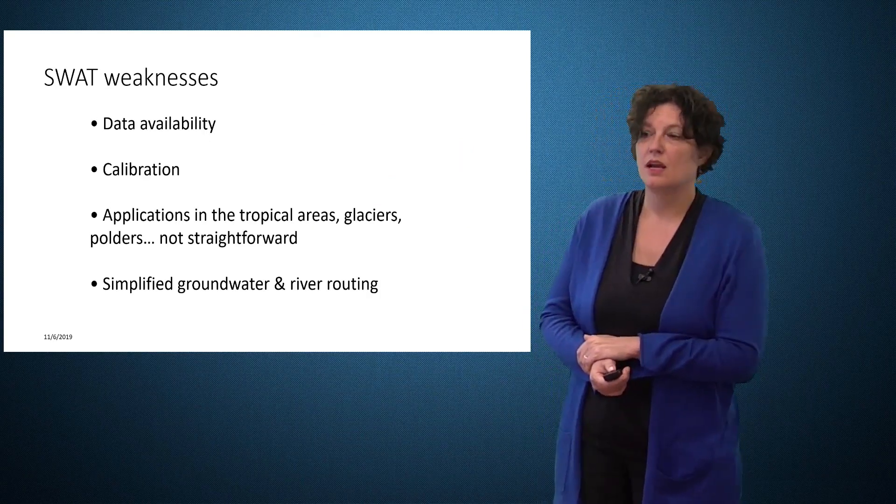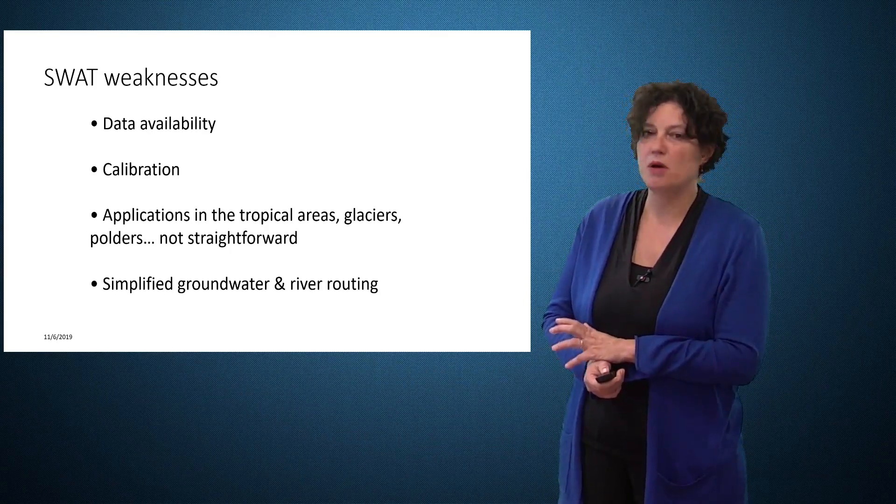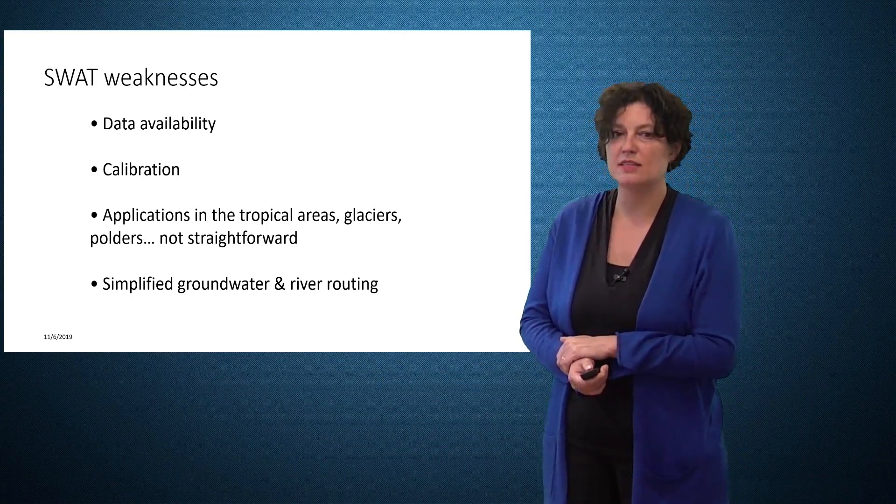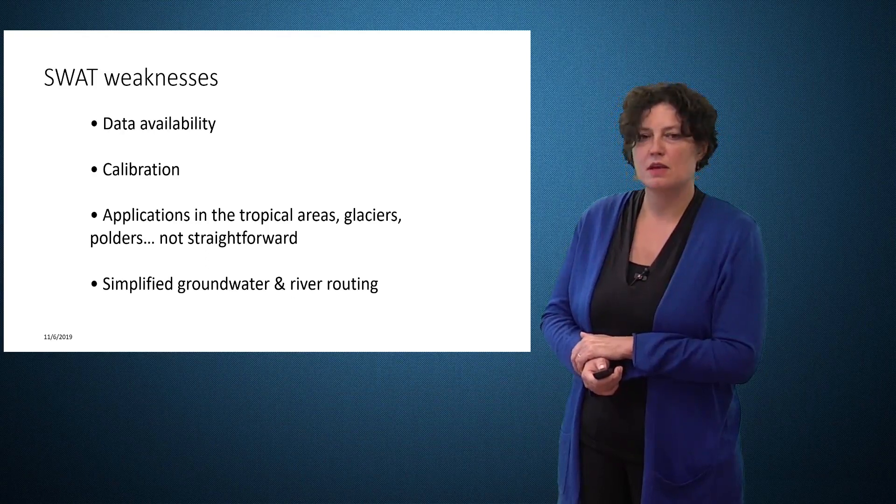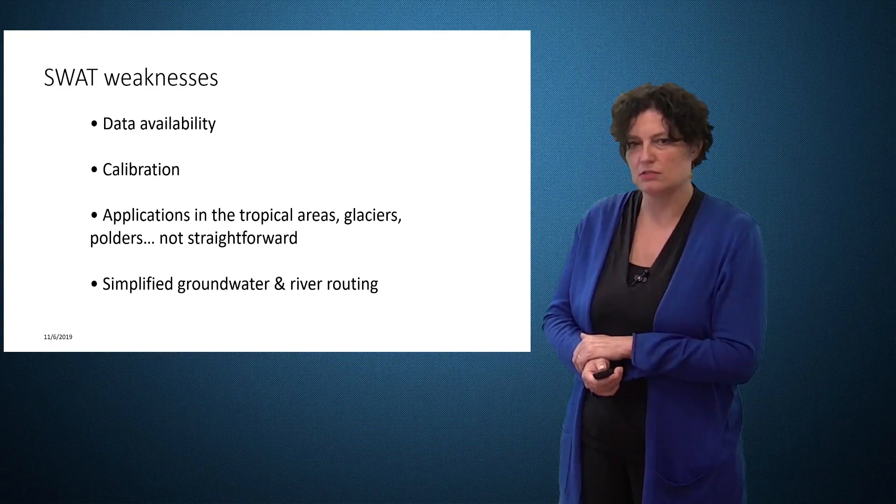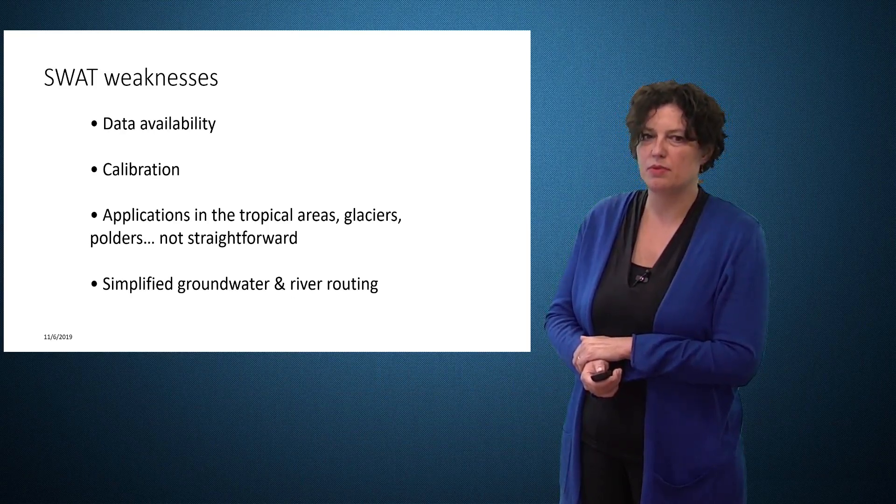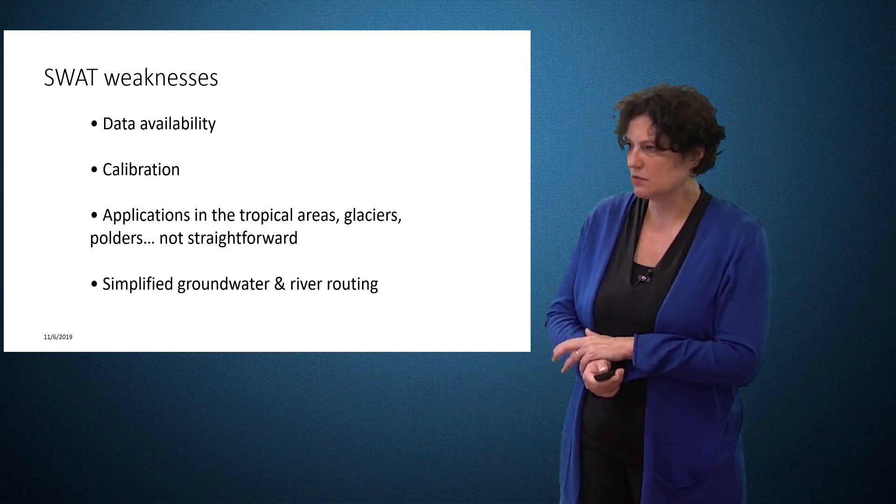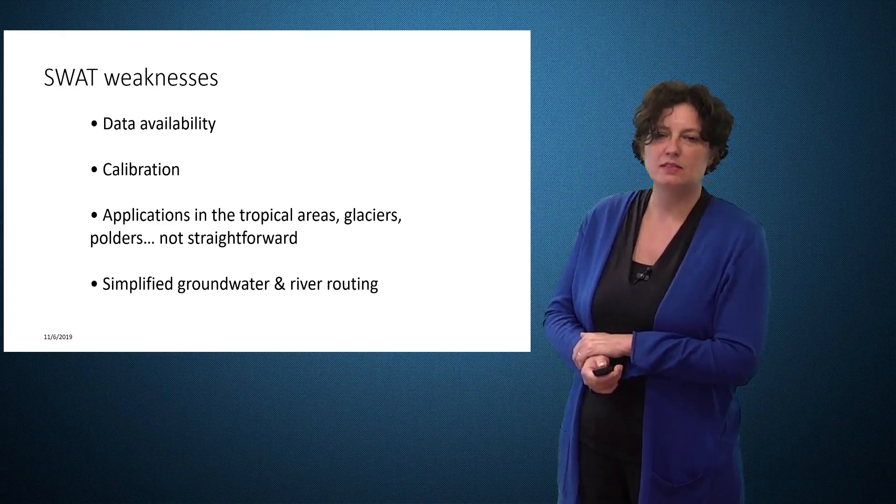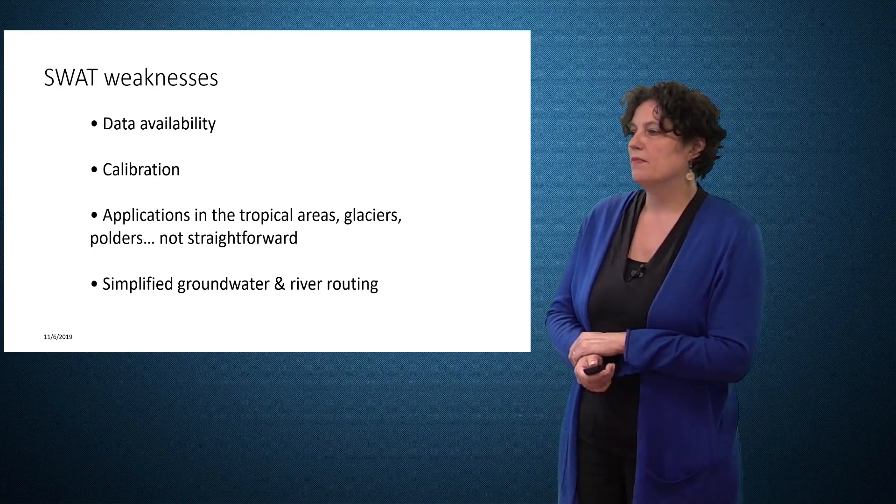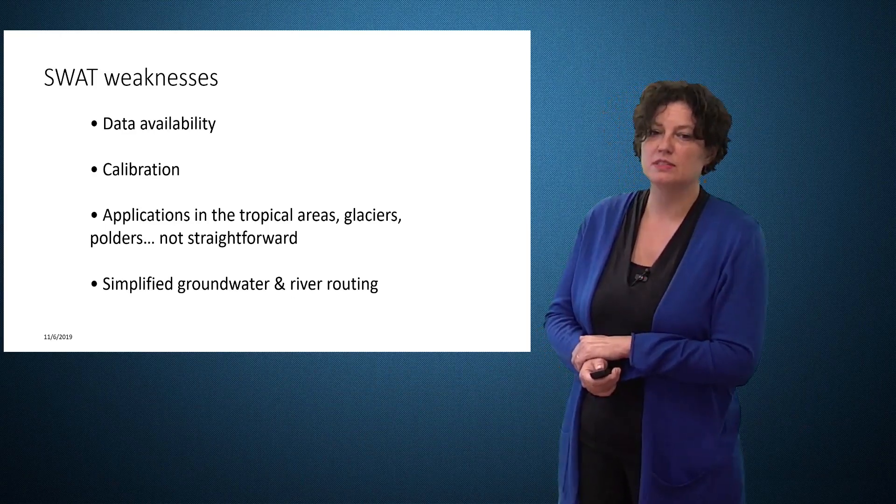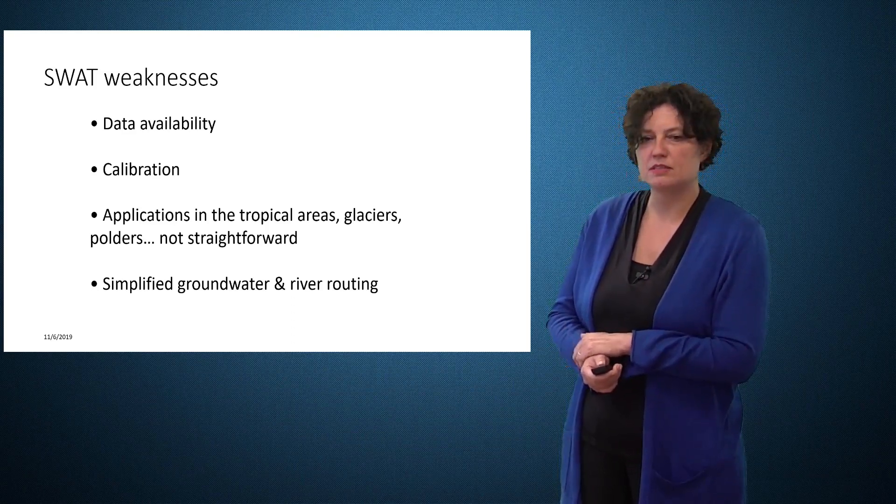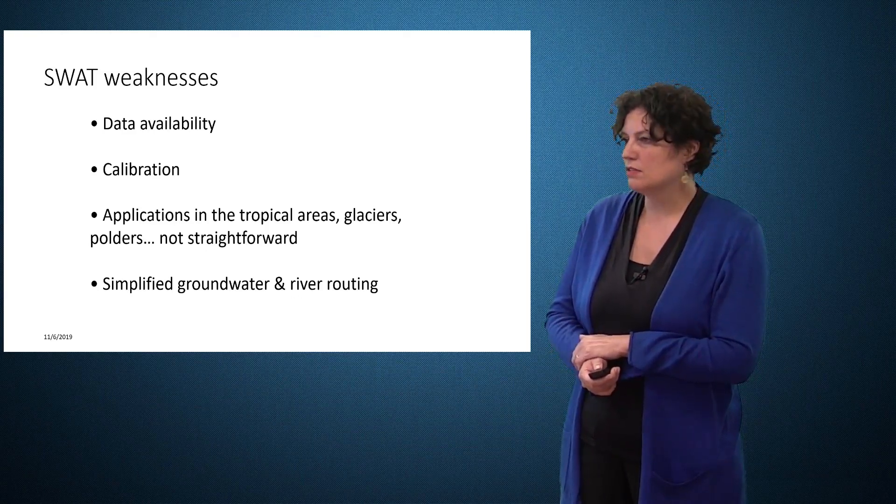But there are also, of course, a few weaknesses. SWAT is a very complex model, but it's also very demanding, demanding in data but also potentially demanding in time. When you apply the SWAT model, especially outside of the US, you will need a calibration because not all the parameters may represent the situation and the conditions of your country. Some applications are still limited, such as applications of SWAT in tropical areas, glaciers and polders. At this moment, it's not straightforward to apply SWAT in these areas, but there's a lot of ongoing research to also make this more possible. There are many, many processes in SWAT. In that sense, it's very complex, but most of the times the processes are very simplified. For instance, this is true for the groundwater. The groundwater is just represented through a reservoir, a linear reservoir. And also the river routing is a very simple approach.